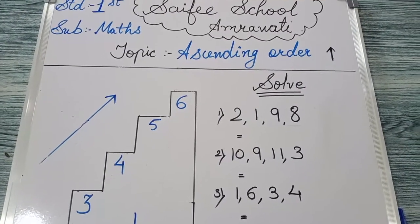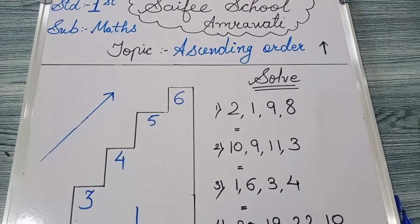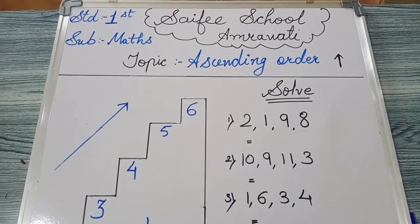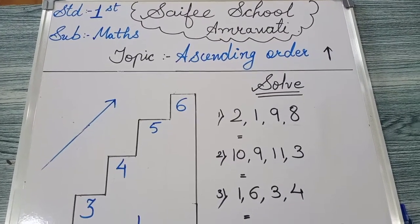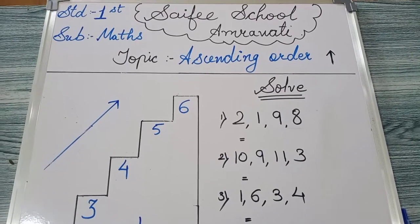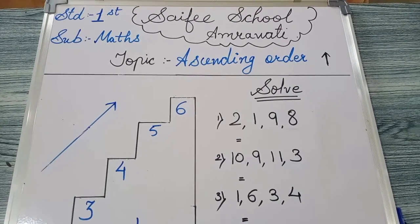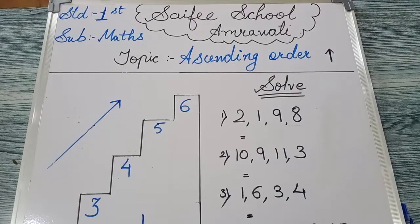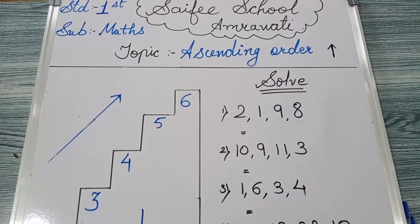Kids, ascending order means increasing order. Ascending order ka matlab hata hai, increasing order. Increasing means badhana. 1, 2, 3, 4, the number goes on increasing. That's why we call it as ascending order.